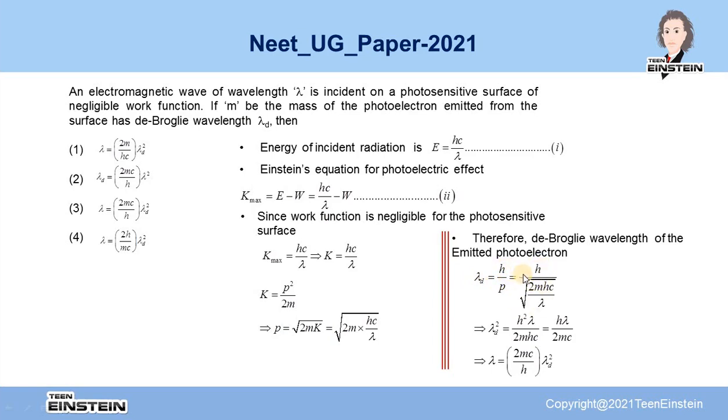Upon simplification, we will be able to reach this relationship: λ = 2mc/h × λ_D². Hence, the third option will be the correct answer for this problem. Thank you.